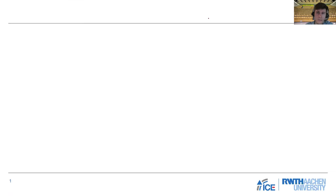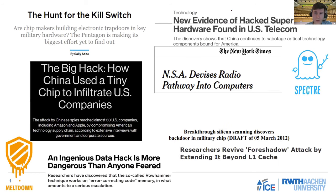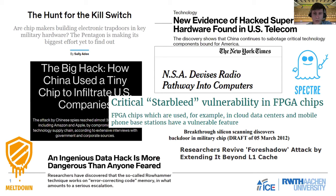Before we take a closer look at the agenda and some basic information about the workshop, let us remind ourselves why we are looking at all these different security topics. As you might have seen from many news entries, vulnerabilities in hardware are basically popping up everywhere — from potential hardware Trojan kill switches in military equipment down to FPGA vulnerabilities, memory vulnerabilities, and architectural flaws.